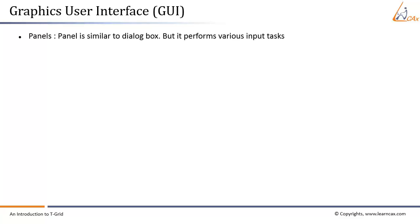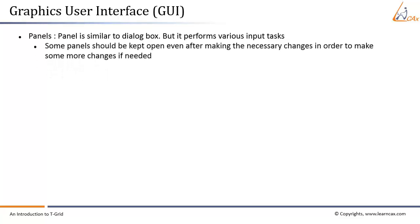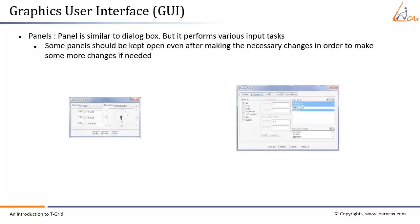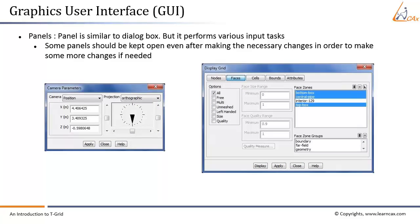Panels mostly perform input tasks, and each panel is designed to perform different tasks. Some panels allow the user to make necessary changes and immediately close. The OK button applies changes and closes the panel; Cancel ignores changes and closes the panel. Some panels should be kept open for further changes: Apply applies changes without closing the panel, and Close closes the panel.